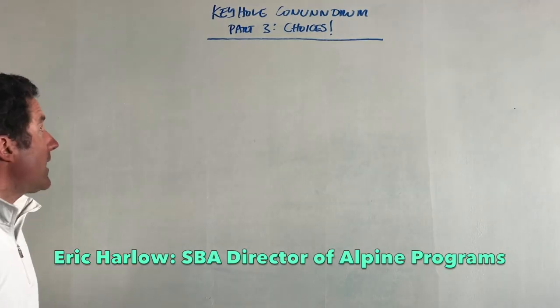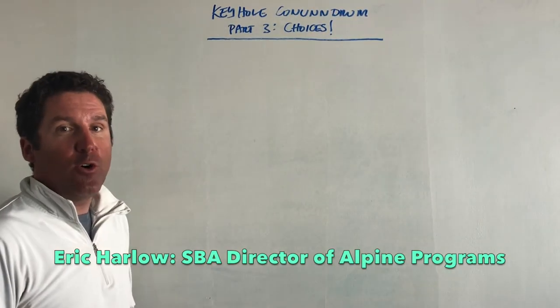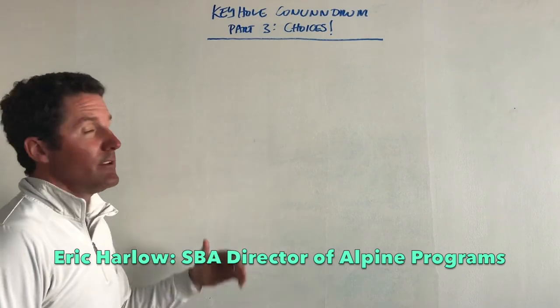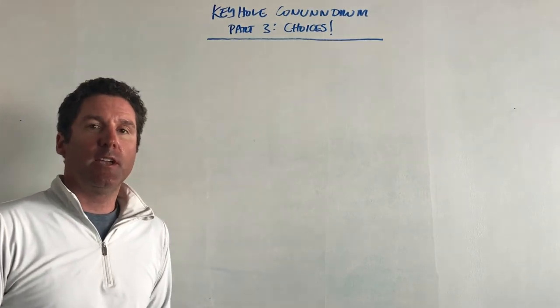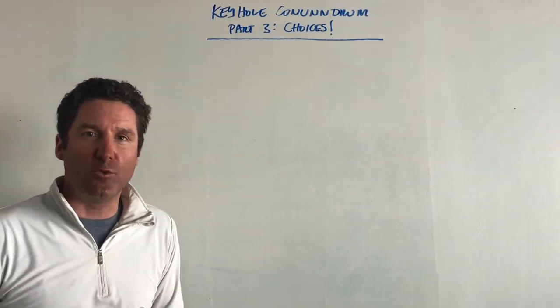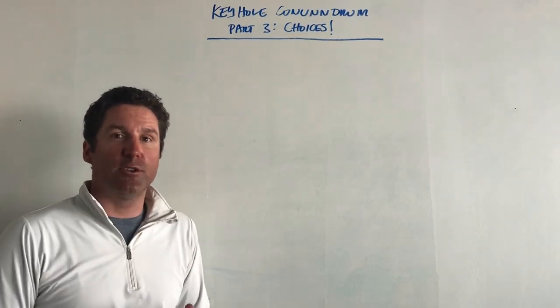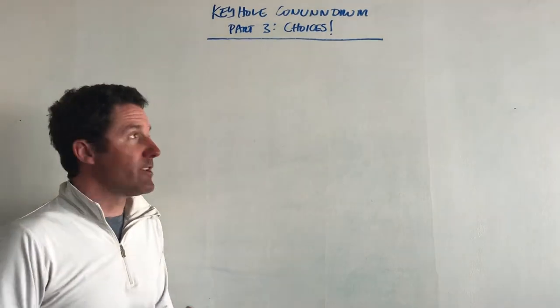Hey, everybody. We're back with part three of the keyhole conundrum. Part three is choices. You have many choices, like we talked about in the first two episodes. There are over 200 schools that offer you an opportunity to ski race in college. But where do you start?